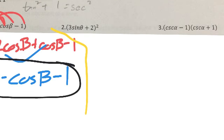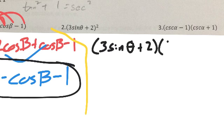Okay, here's the next one. 3 sine of theta plus 2 squared. So that means I have to multiply it by itself. I can't just square the first term and the last term.